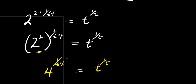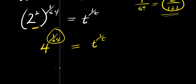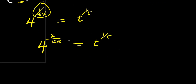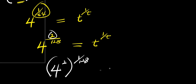So we go over again. Instead of writing 1 over 64, I can simply have it as 2 over 128, since 1 times 2 is 2 and 64 times 2 is 128. So I'm going to have 4 to the power of 2 over 128, and this equals t to the power of 1 over t. So what I can do right now is to factor out 2 from here, so I can have it as 4 to the power of 2, raised to the power of 1 over 128, and this equals t to the power of 1 over t.